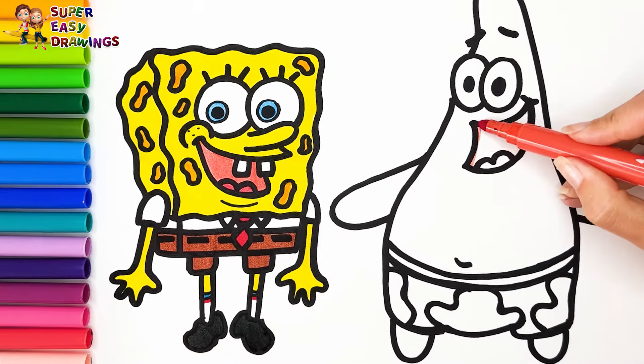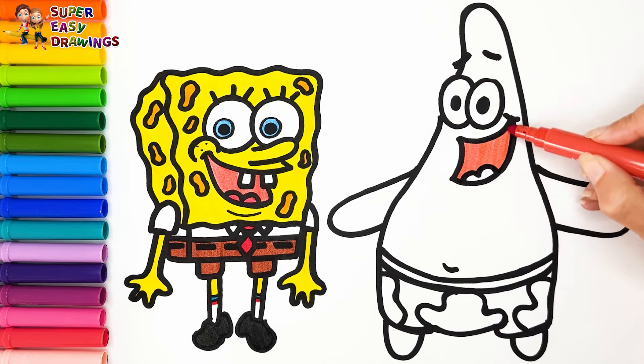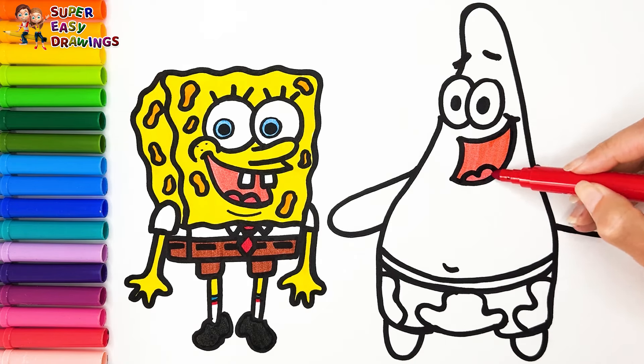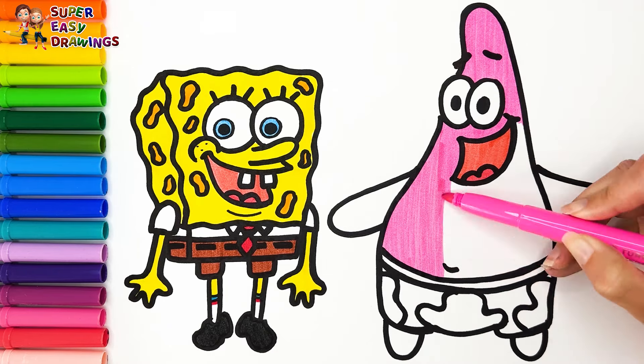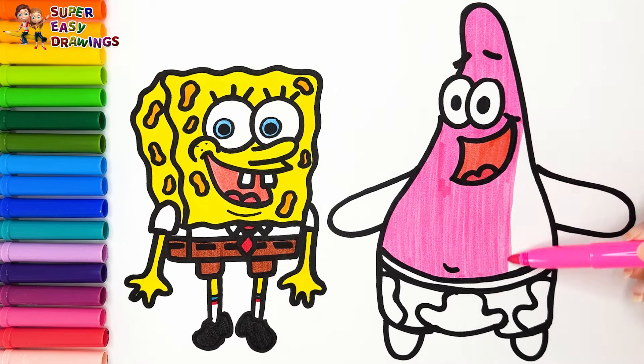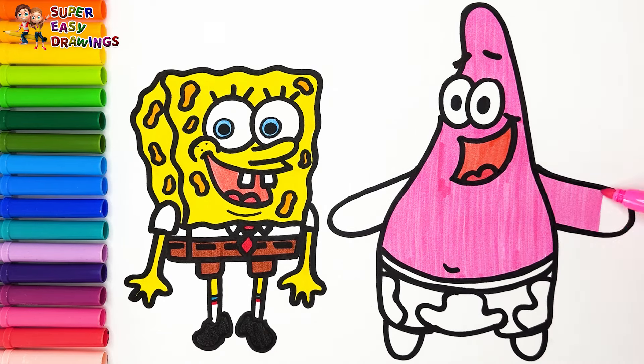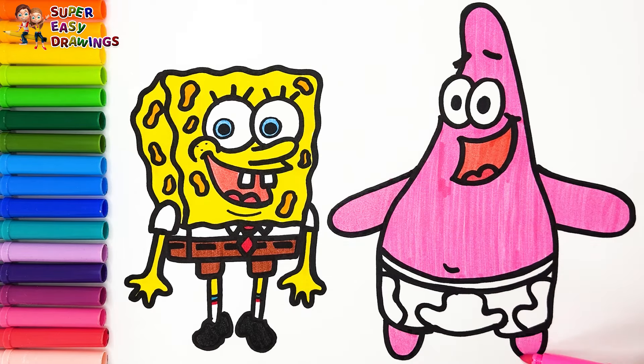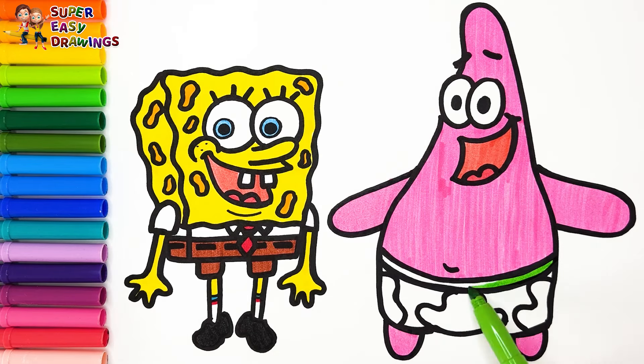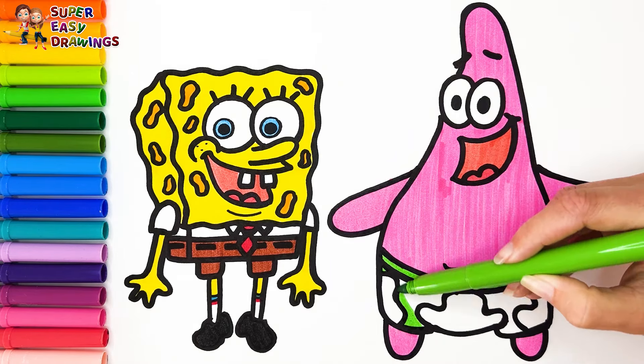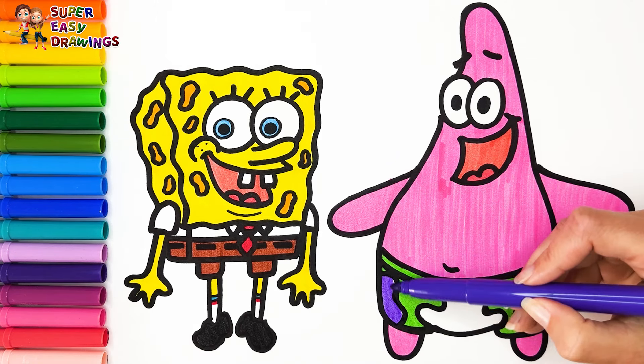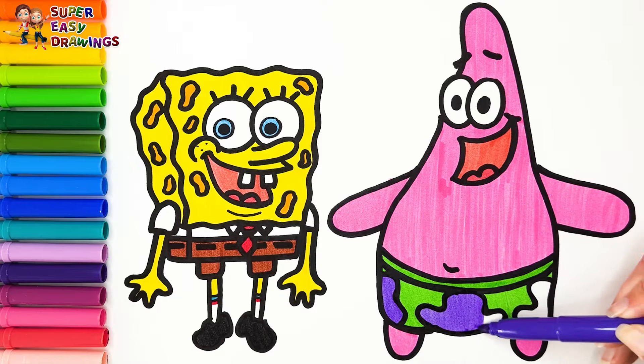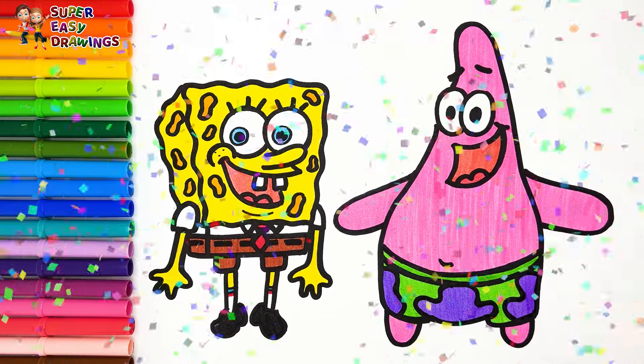Now let's color Patrick Star. Let's use two different shades of red for his mouth. Then I color his body pink. Then I use green and purple for his pants. Very good!